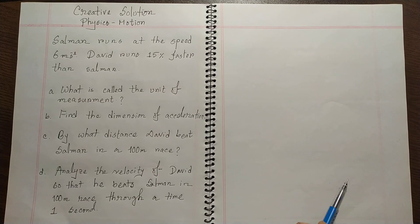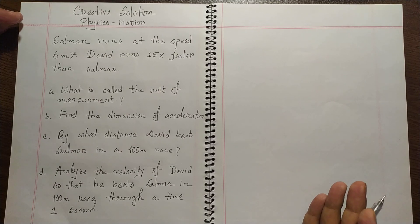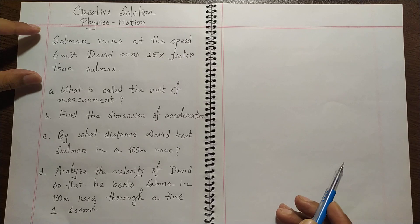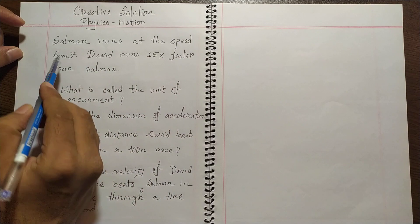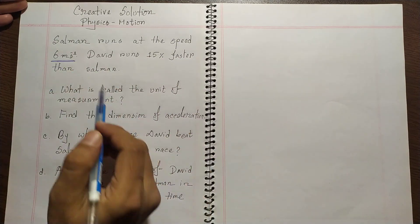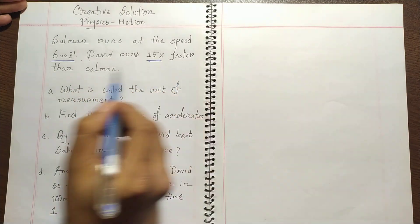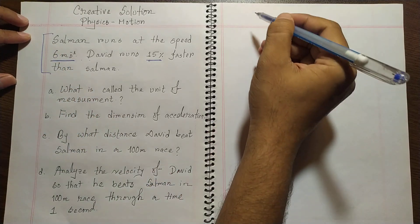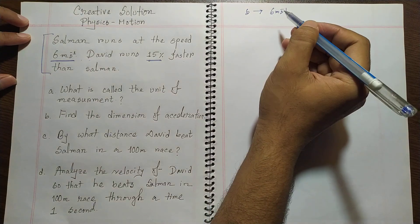Welcome to another creative solutions of physics, chapter Motion. This is an interesting but easy type of mathematics. The problem states that Salman runs at a speed of 6 meters per second, and David runs about 15 percent faster than Salman. So we have two bodies: Salman moving at 6 m/s and David moving 15 percent faster.